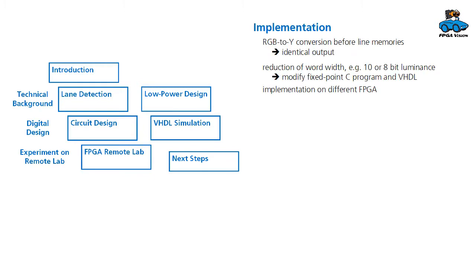To improve the implementation, you can shift the RGB conversion before the line memories. This has been described in one of the videos. The output of the circuit should be identical, so you can use the same test bench and the same C program as before.